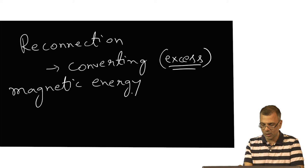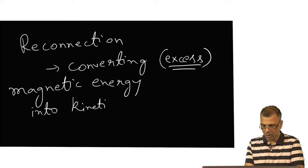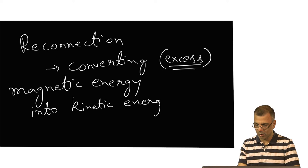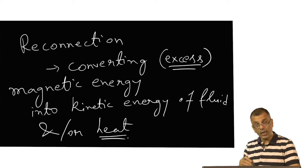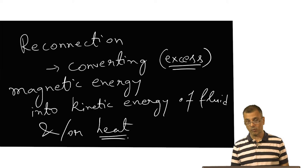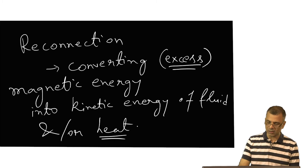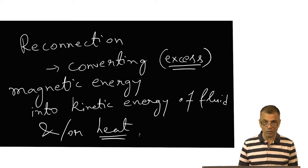Converting magnetic energy into kinetic energy of the fluid — bulk motion of the fluid — and or heat, heating the plasma, making the plasma hotter than it originally was. In many ways, this is the real reason reconnection is invoked so often in astrophysics.